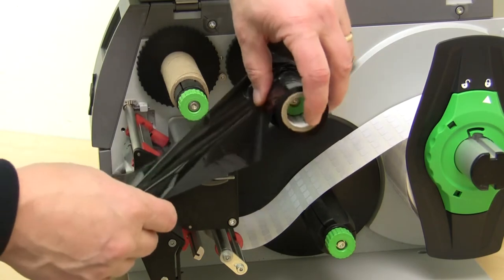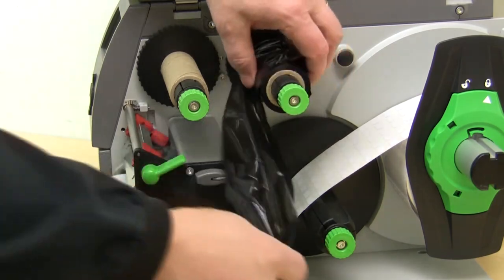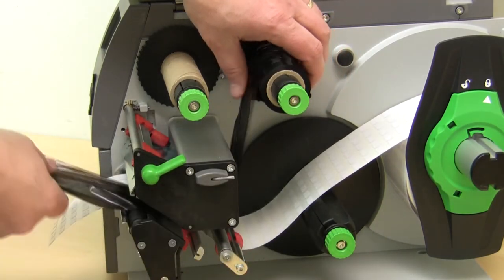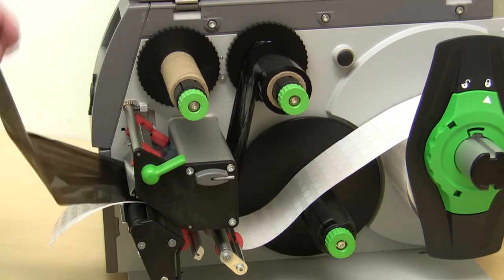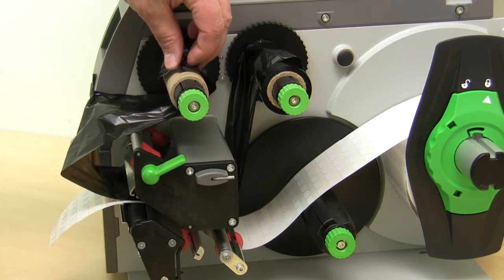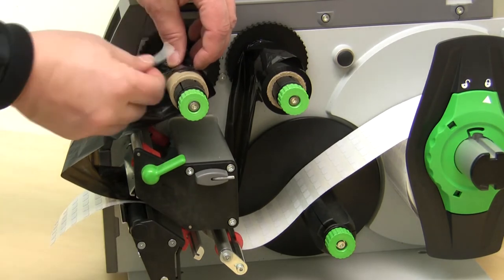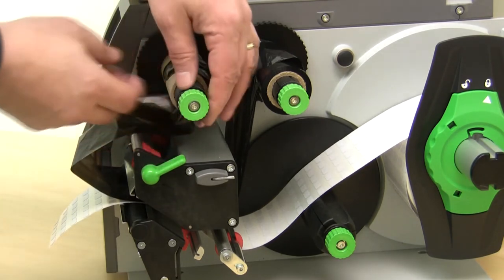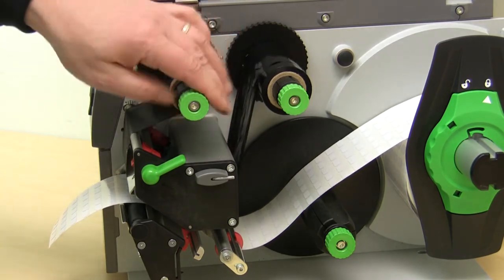Place the ribbon on the spindle. Again, the open side architecture allows us to easily bring the ribbon through and then we'll tape it up on the take up spindle. Just use a piece of tape or a label or whatever. Roll it tight.